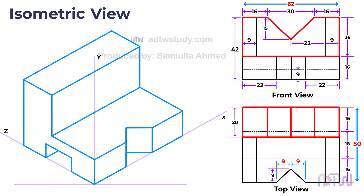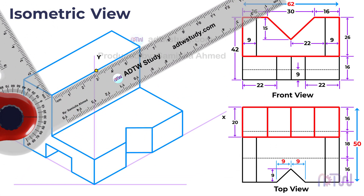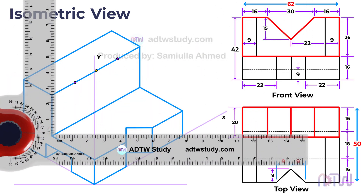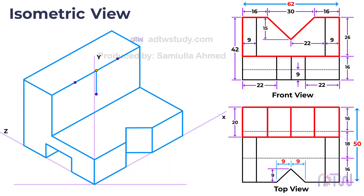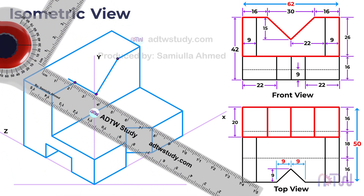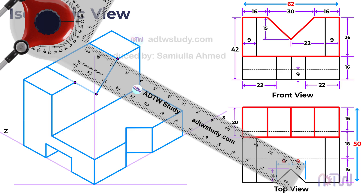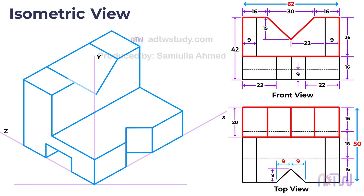Join the endpoints of these vertical lines to complete the outline for the vertical portion, then remove non-visible lines for clarity. There is a notch of width 30 millimeters and depth 15 millimeters exactly in the middle of the vertical portion. Using a drafter, mark a point at a distance of 31 millimeters from the side, then mark points 15 millimeters away from either side of this point. Draw a downward vertical line of 15 millimeters from the middle point and join these three points to form the notch. Then draw 20-millimeter lines parallel to the z-axis from these three points to give thickness to the notch, and join the endpoints to fully complete the notch construction.